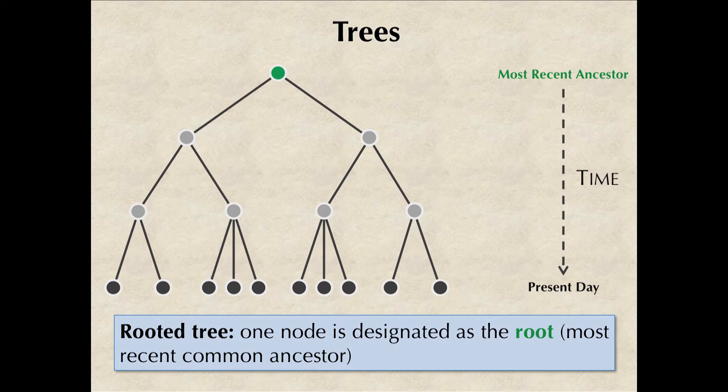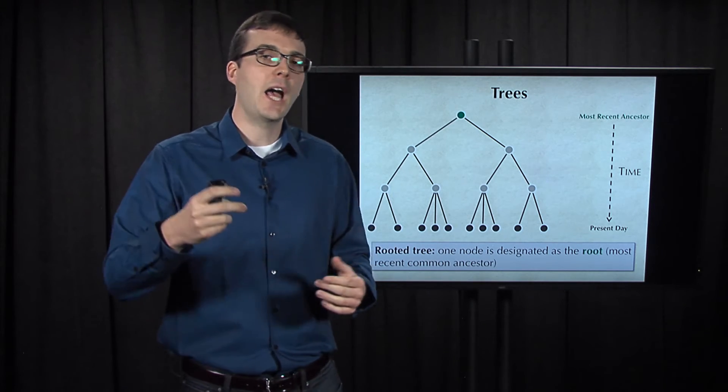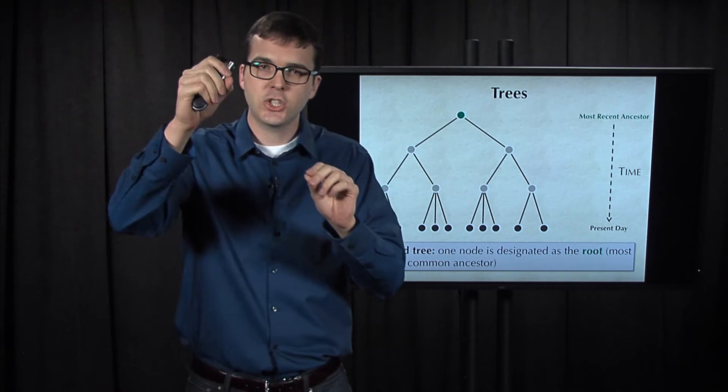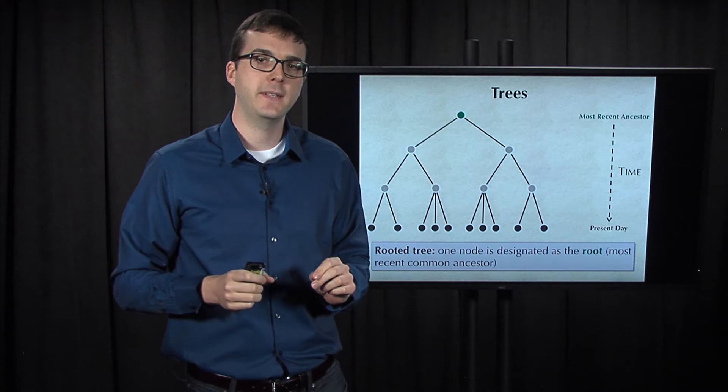In order to model the most common ancestor of all the species in trees, we will sometimes place a root in a tree. If a tree is rooted, shown here by the green node, then the root can be drawn at the top of the tree with the leaves at the bottom. By reorienting the tree in this way, we know that time flows downward from the root to the leaves in the sense that each edge connects an older species to a more recent species.